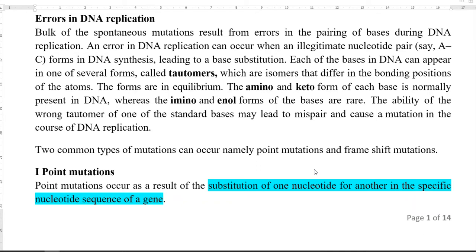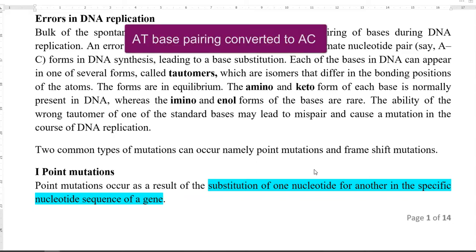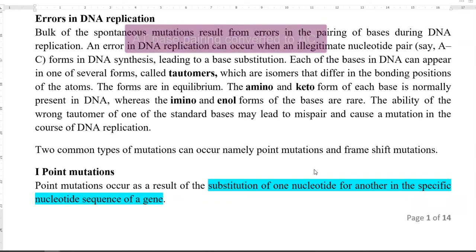An error in DNA replication can lead to illegitimate base pairing. A common base pairing is A and T, whereas due to a replication error, A can pair with C. This leads to a substitution kind of mutation in the nucleotide sequence.